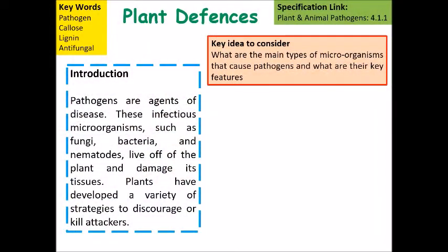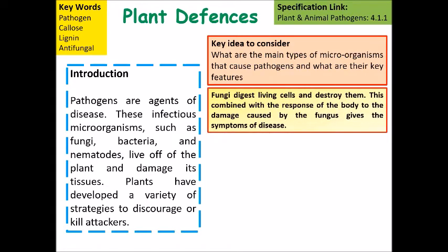The first thing to think about when considering plant diseases are the three main types of organisms that cause diseases within plants. Fungal diseases are probably the main one — fungal diseases digest living cells and destroy them, combined with the response by the cells in the plant, which will cause the symptoms of the disease.